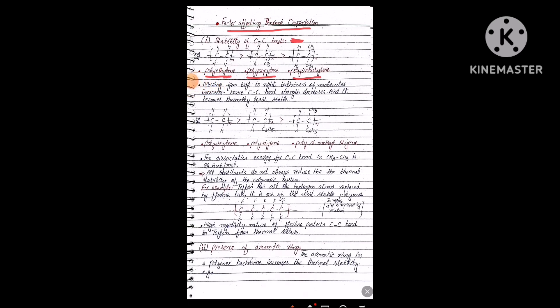In polyethylene, the chain is –CH₂–CH₂– elongated. In polypropylene, a CH₃ bulky group is attached to the chain. In polyisobutylene, two substituents are attached. Moving from left to right, bulkiness of the molecule increases and hence carbon-carbon bond strength decreases.